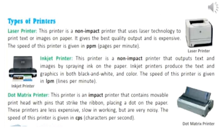Dot matrix printer. This printer is an impact printer that contains a movable print head with pins that strike the ribbon, placing a dot on the paper. These printers are less expensive and slow in working, but are very noisy. The speed of this printer is given in CPS, that means characters per second.